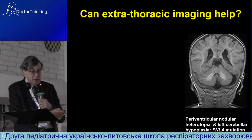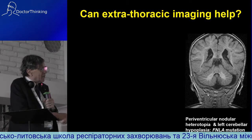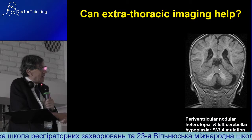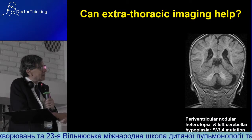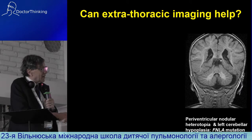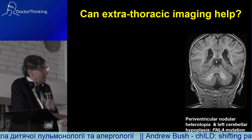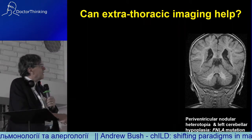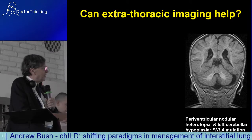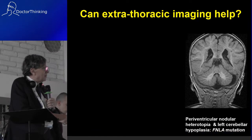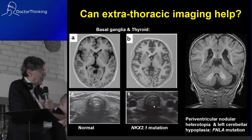What about other imaging? If you have a lung disease with neurological involvement, think about an MRI scan. You can see cerebellar hypoplasia and periventricular nodules in an FNLA mutation. Here, a TTF1 mutation shows abnormal brain imaging and abnormal thyroid imaging.